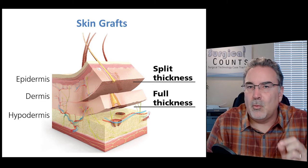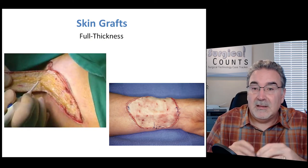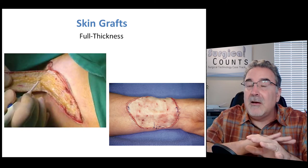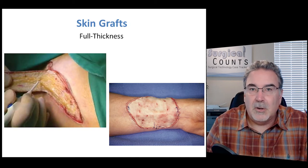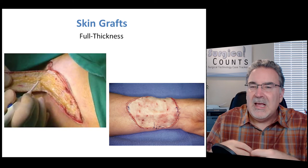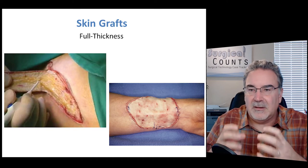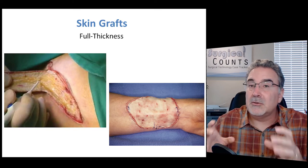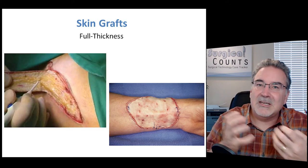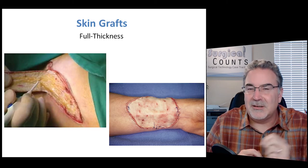There are advantages and disadvantages to each type of skin graft. The advantage of a full thickness skin graft is appearance — we're taking the entire skin, laying it over the new location, suturing it into place for a nice smooth layer. The disadvantage is that this is living skin needing a good blood supply, which is hard to achieve, and some of the graft may die because it didn't get the blood it needed to survive.